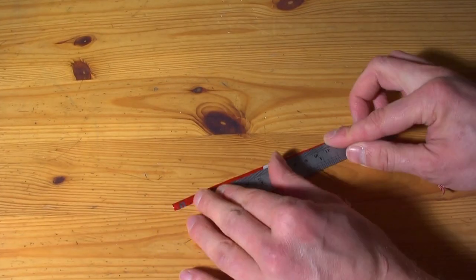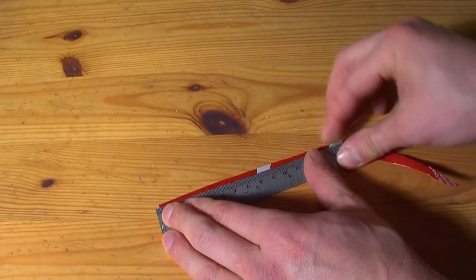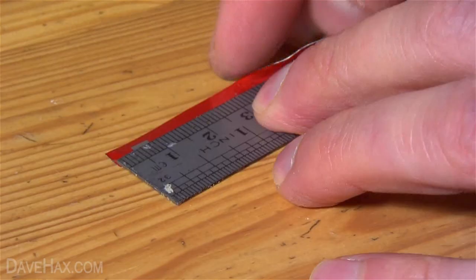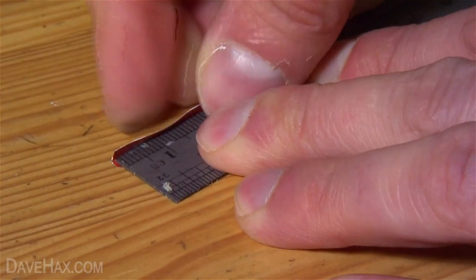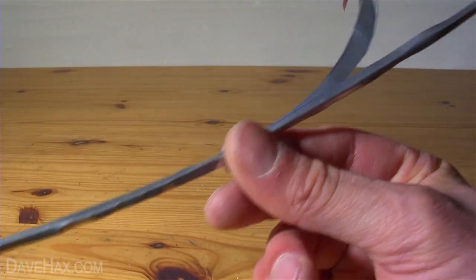Then, using a hard edge like a metal ruler, fold the stem all the way along to make it rigid. You might want to use a pair of pliers to do this. It should look like this.